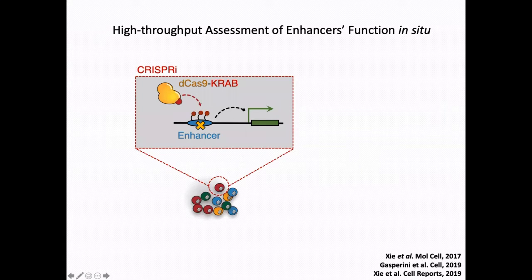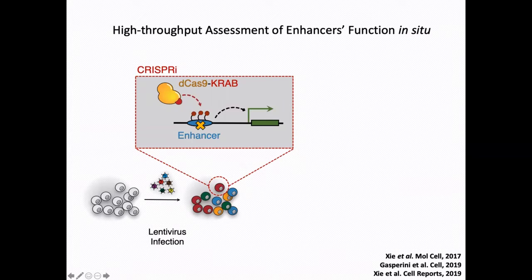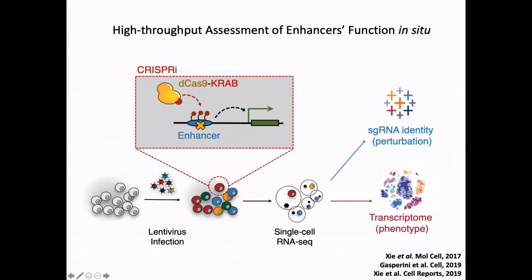A few years ago, we and others started to use single-cell perturbation assays to study the function of enhancers in their original genomic context. We use CRISPRi to perturb enhancers, in which we have a catalytically dead Cas9 (dCas9) fused with the KRAB domain. Once this construct is recruited to a certain enhancer region, it starts to recruit suppressors and deposit histone modifications to shut down enhancer function. We use a lentiviral library to infect the cell type we want to study, so that in every single cell you have a different guide RNA targeting a different enhancer. We then apply the sample to single-cell RNA technology, capturing both the sgRNA identity and the transcriptome within the same cell — simultaneously getting perturbation and the phenotypic readout.